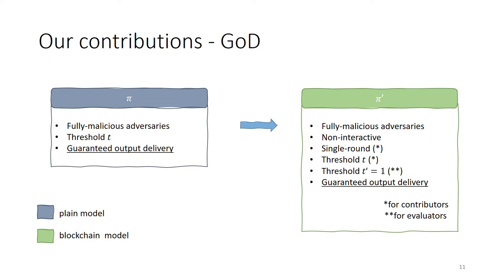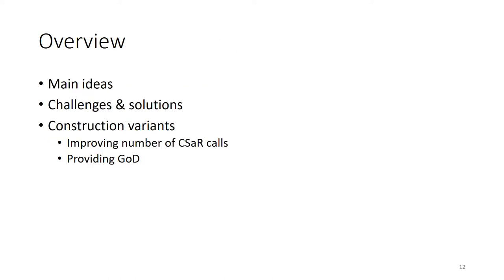Finally, in the other variation of our main construction, we show how a similar non-interactive transformation can be achieved with the property that the resulting protocol additionally provides guaranteed output delivery. For this, we will require that the original protocol provides guaranteed output delivery as well. In the following, we will start by discussing the main ideas of our construction, then provide an overview of the challenges we encountered and the ways we solved them, and finish by discussing the variants of our construction that provide further desirable properties.